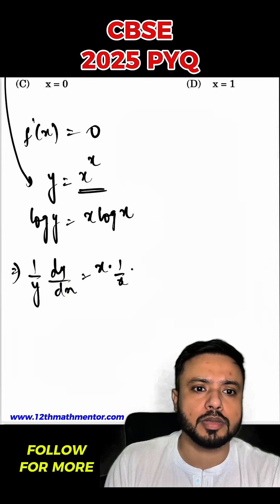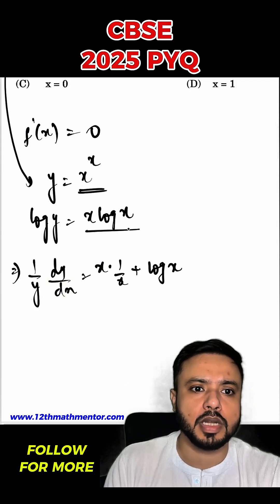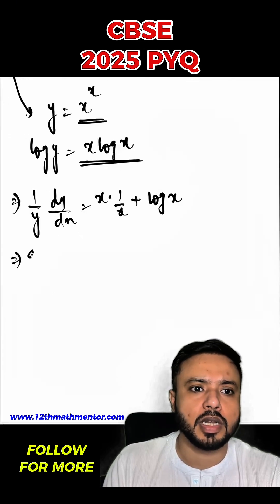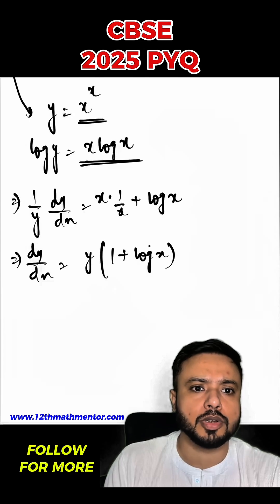Basically, this side I have used product rule of differentiation. So when I differentiate it, I'll get dy/dx equals y into 1 plus log x, because this x and x will get cancelled.